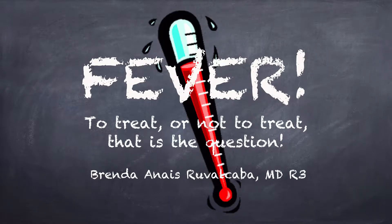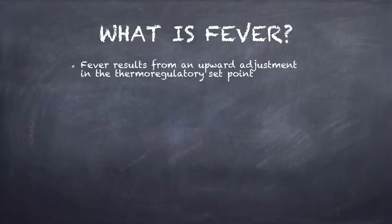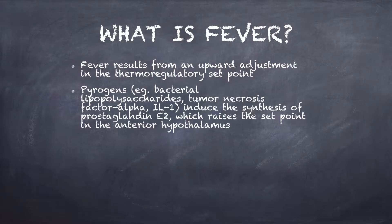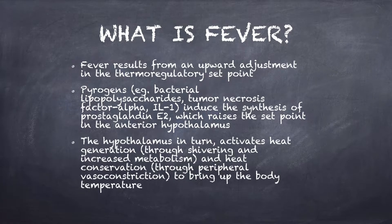Thank you, Dr. Freed. So the topic is fever: to treat or not to treat. First, what is fever? Fever results from an upward adjustment in the thermoregulatory set point. Pyrogens such as bacterial lipopolysaccharides, tumor necrosis factor alpha, and interleukin 1 induce the synthesis of prostaglandin E2, which then raises the set point in the anterior hypothalamus. The hypothalamus in turn activates heat generation through shivering and increased metabolism, and heat conservation through peripheral vasoconstriction — all of this to bring the body temperature up.